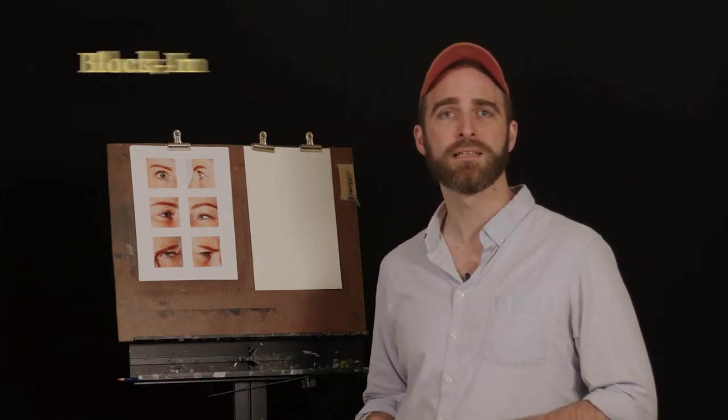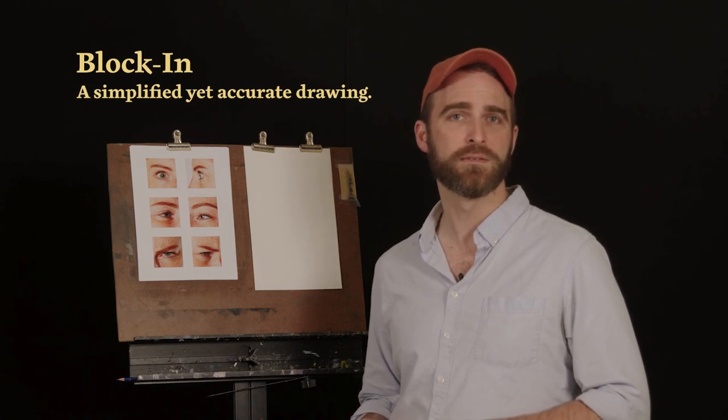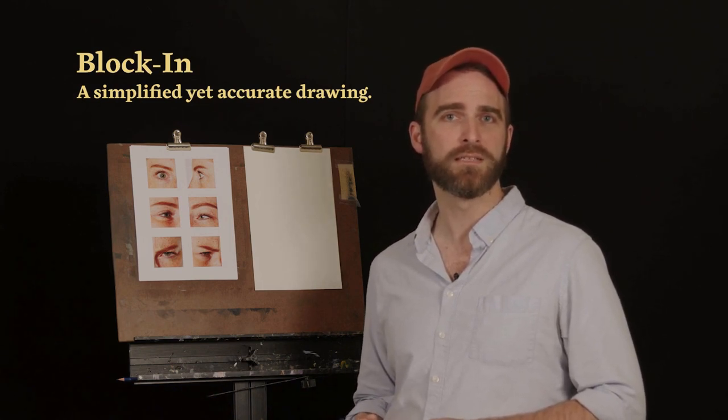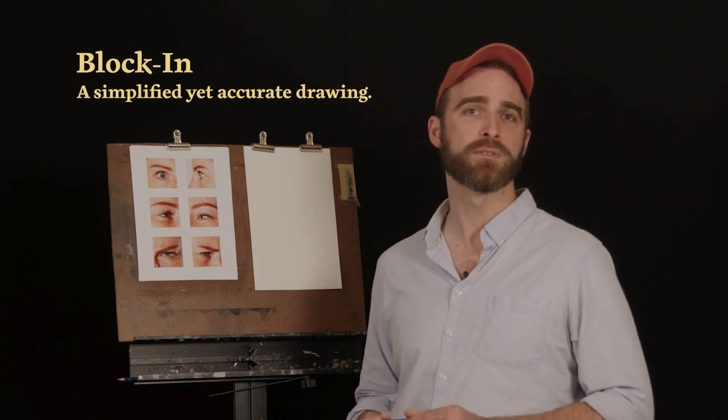One way to get around this is to start as simply as we can. I'm going to introduce you to a term called block-in. In visual arts, a block-in refers to a simplified yet accurate drawing. It's basically a map without any features. A good block-in is going to tell me exactly where major landmarks are, but not the smaller and more specific details.